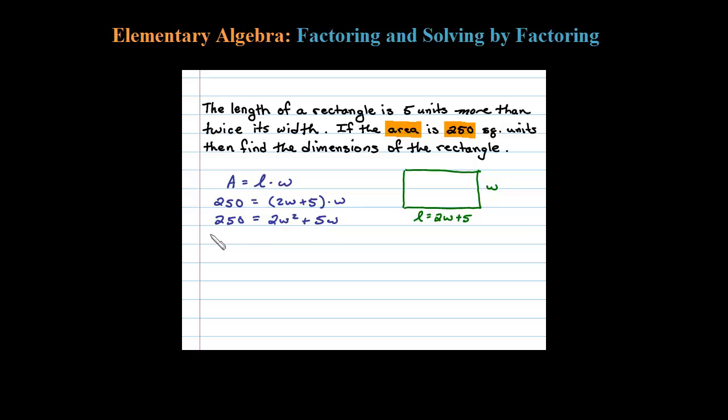To solve quadratics, the technique we have is to set it equal to 0, so we'll subtract 250 on both sides. That leaves us with 0 equals 2W² plus 5W minus 250. From here I'm going to try to solve this by factoring.